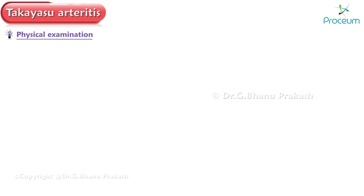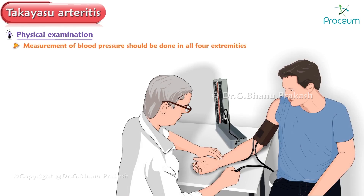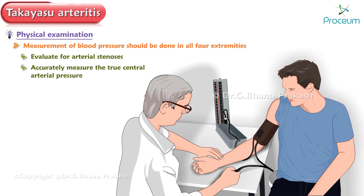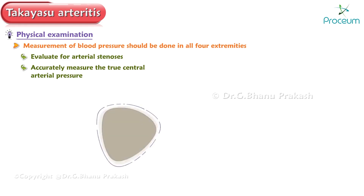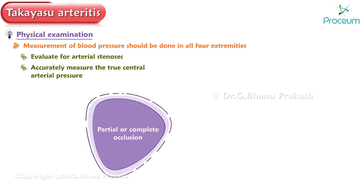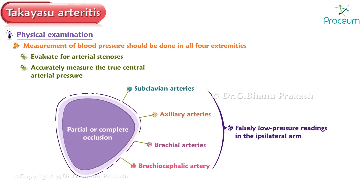Regarding the physical examination: several aspects merit particular attention whenever a patient with TAK is seen in clinical practice. Measurement of blood pressure should be done in all four extremities to evaluate for arterial stenosis and accurately measure the true central arterial pressure. Many patients with TAK will have partial or complete occlusion of one or both subclavian, axillary, or brachial arteries, or the brachiocephalic artery, leading to falsely low pressure readings in the ipsilateral arm.